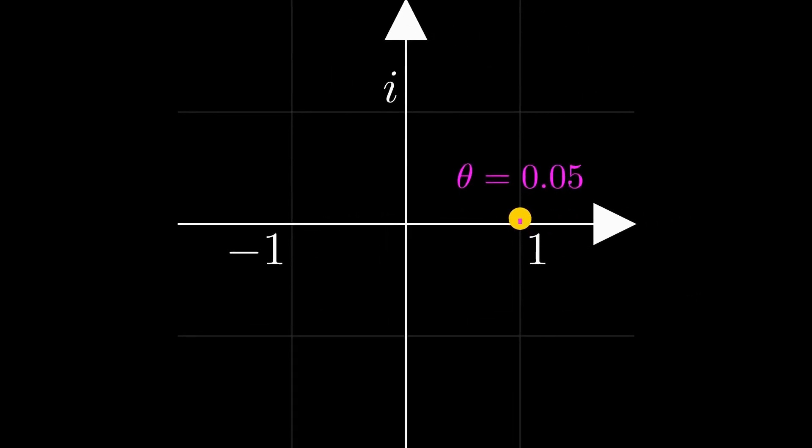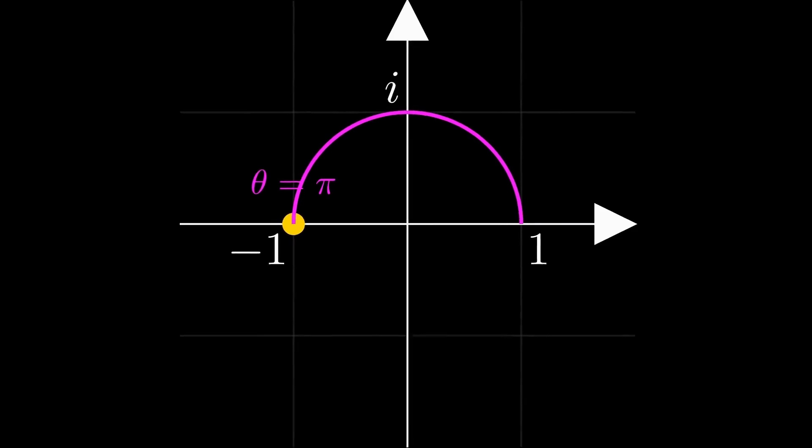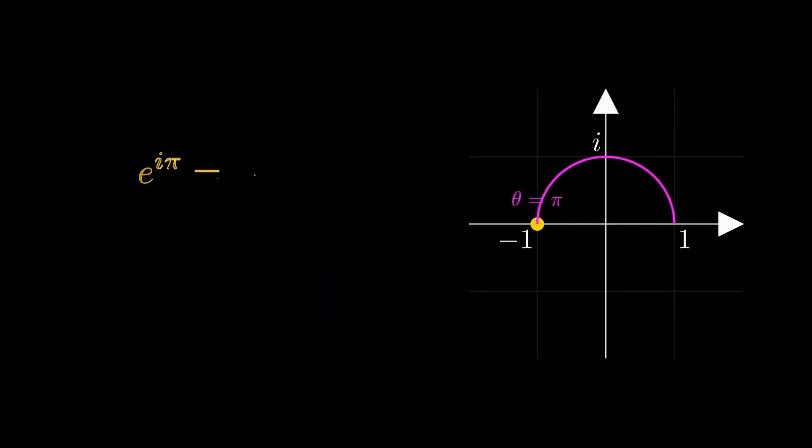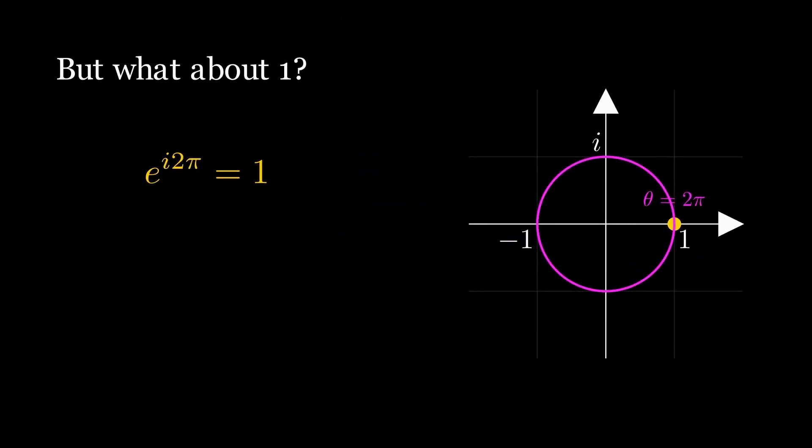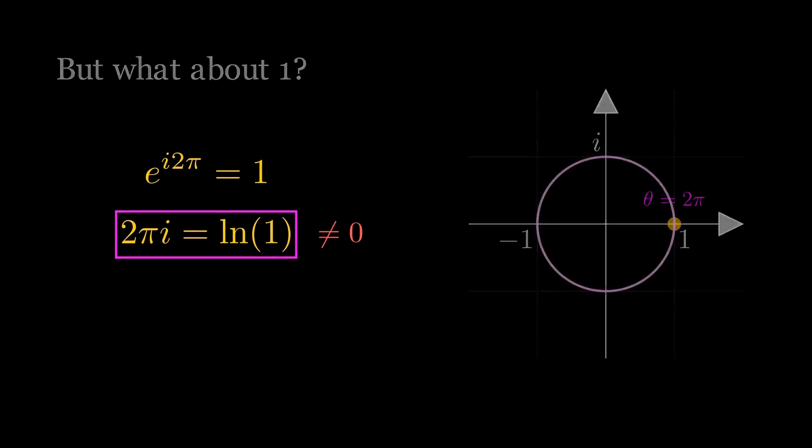Now watch the geometry. On the complex plane, a half turn, angle equals π, lands you at negative 1. So e to the i times π equals negative 1, which means log of negative 1 can be i times π. And a full turn brings you back to 1. 2π returns to the start, so log of 1 can be 2πi, not just 0, that's the key.